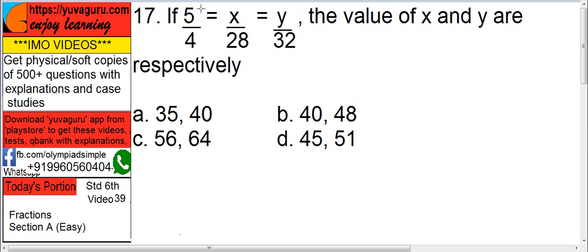Next is, if 5 upon 4 equals to x upon 28 equals to y upon 32, then the values of x and y are respectively.